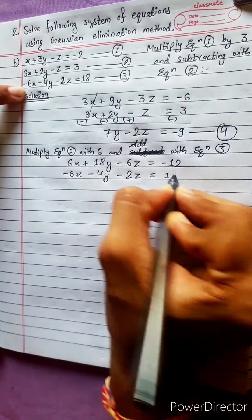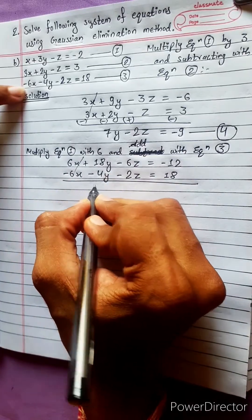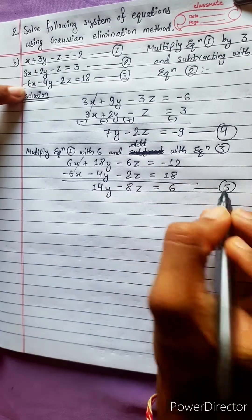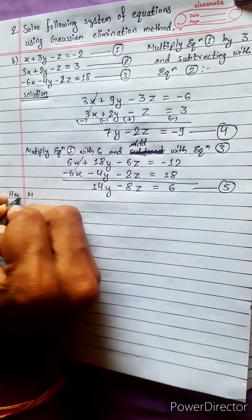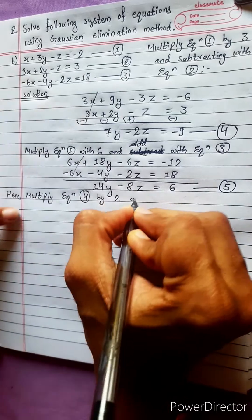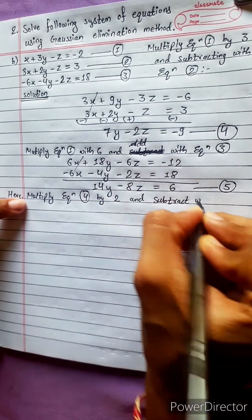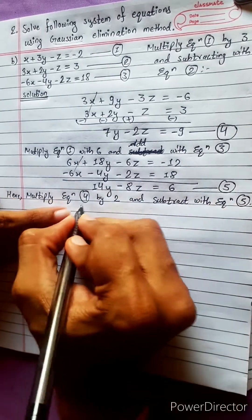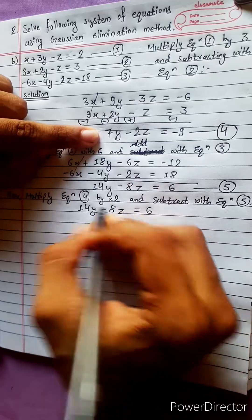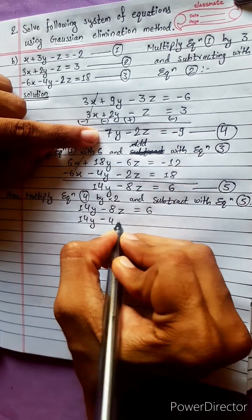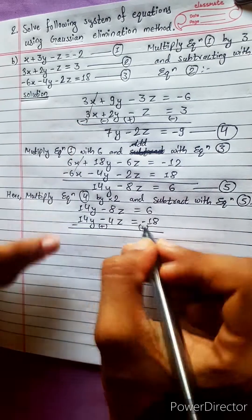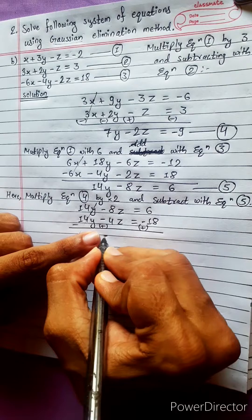This gives us equation 5. Now solving equations 4 and 5 together: multiply equation 4 by 2 and subtract with equation 5. This gives 14y minus 4z equals negative 18, and after subtraction the y terms cancel, leaving minus 4z terms.